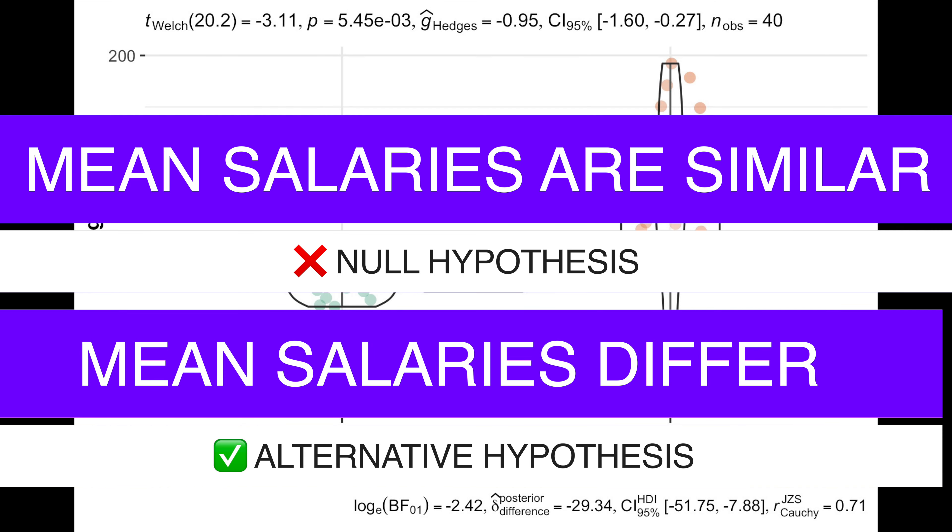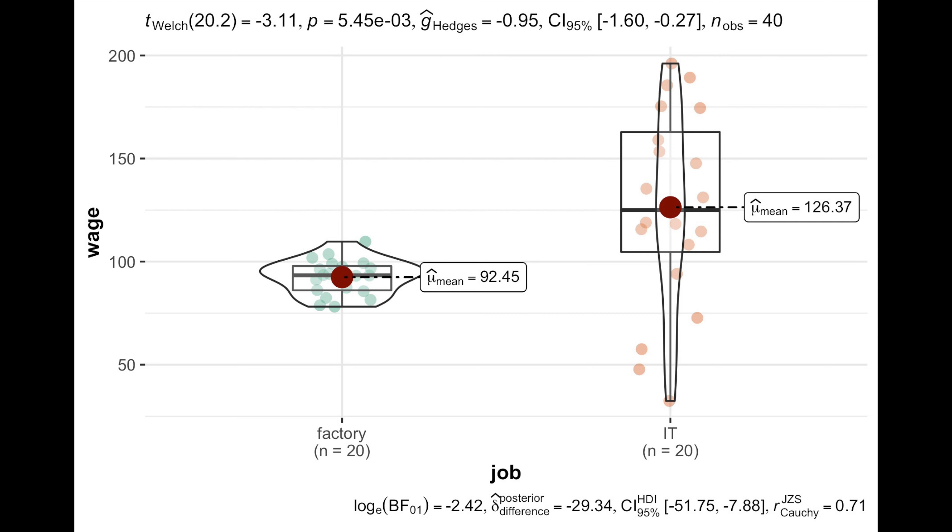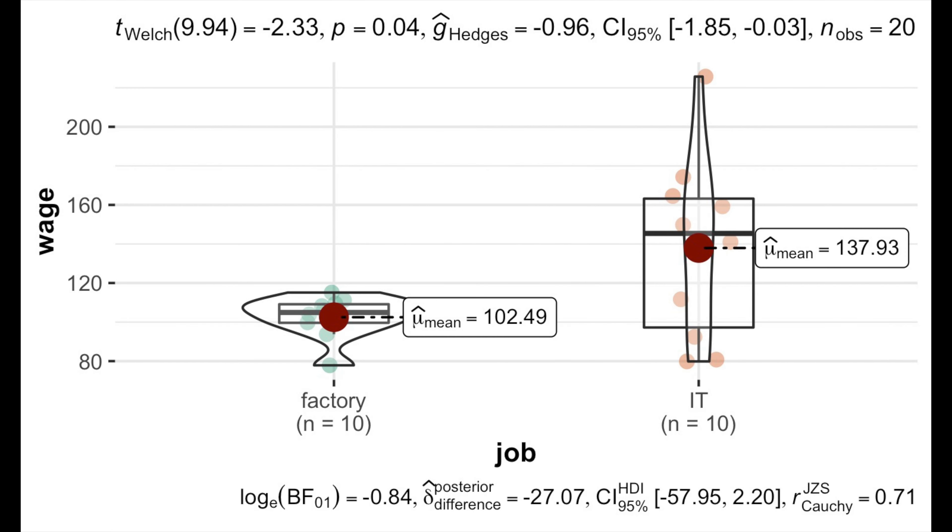Thus, a p-value and the effect size never contradict each other, simply because they show different things.